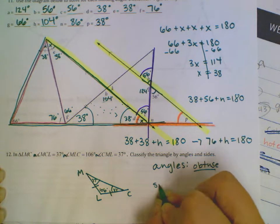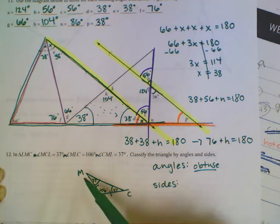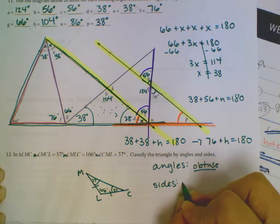Then, if I'm classifying it by sides, that's when I'll say scalene, equilateral, or isosceles. Because I have two congruent sides, that will make this triangle isosceles.